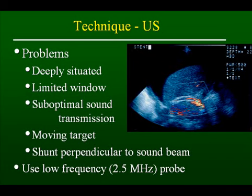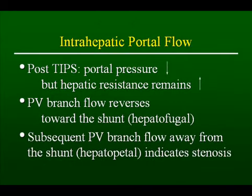In general, we tend to use a low-frequency probe for its advantages with penetration. Post TIPS, the portal pressure should decline, but hepatic resistance remains elevated. As a result, flow in the portal venous branches — and in particular the left portal venous branch — will tend to reverse. It will go away from the liver and towards the shunt in a hepatofugal orientation. If the portal vein branch reverses and goes towards the liver and away from the shunt — that is, hepatopetal — that indicates stenosis of the shunt and is an important indicator of early shunt dysfunction.